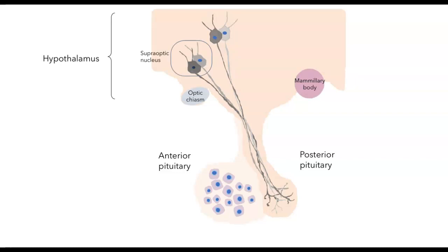The cell bodies of the neurons that terminate in the posterior pituitary lie either in the supraoptic nucleus or in the paraventricular nucleus. These neurosecretory cells have large cell bodies — we call them magnocellular neurons. In the supraoptic nucleus, all of the neurons there are magnocellular. In the paraventricular nucleus, there are also some other smaller neurons called the parvacellular neurons, and I'll come back to those in a little bit.